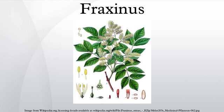Fraxinus is a genus of flowering plants in the olive and lilac family, Oleaceae. It contains 45 to 65 species of usually medium to large trees, mostly deciduous though a few subtropical species are evergreen. The genus is widespread across much of Europe, Asia and North America.